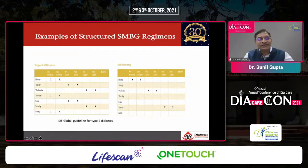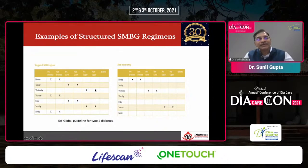One structured SMBG regimen is the staggering method: on Monday you do fasting and post-breakfast; the second day you do pre-lunch and post-lunch; Wednesday, pre-dinner and post-dinner — and you rotate like this. Once a week you can cover all time points. It can be meal-based, pre and post-meal on any day, or even one test per day.